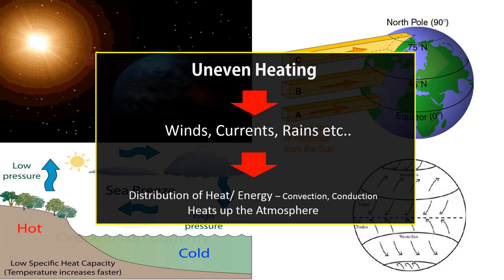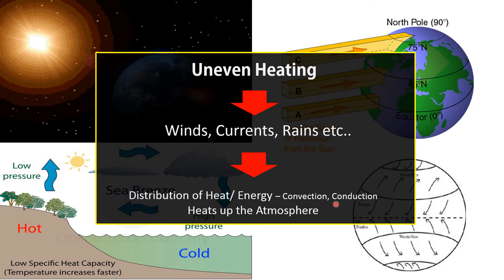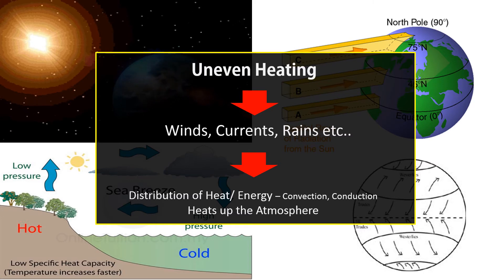This distribution occurs through convection or conduction, and convection and conduction are the main reasons for heating up of the atmosphere.